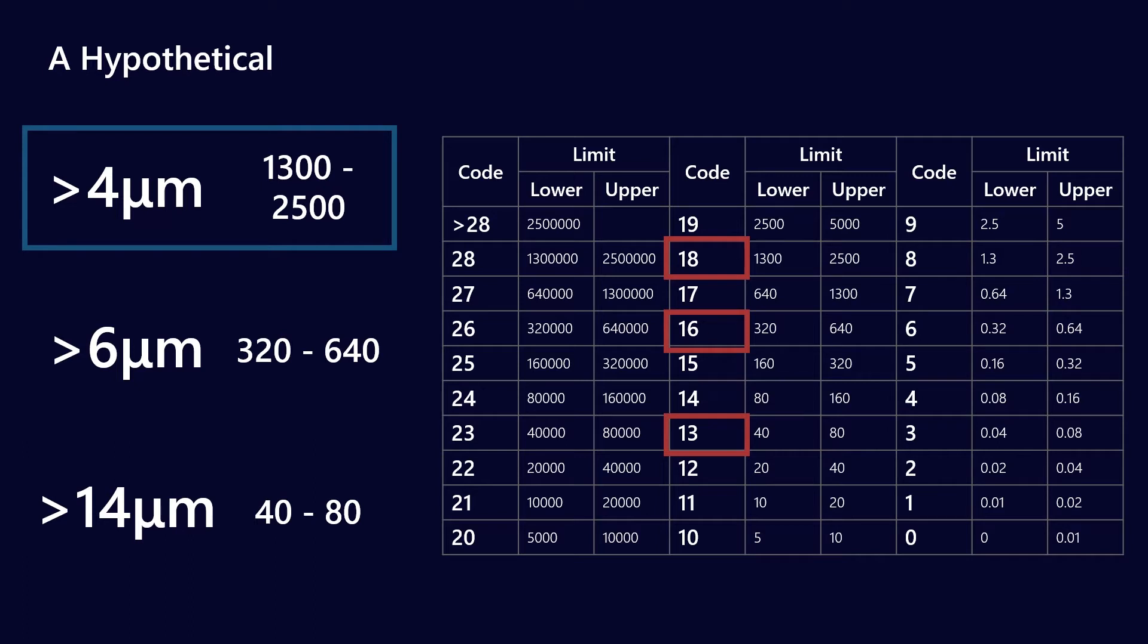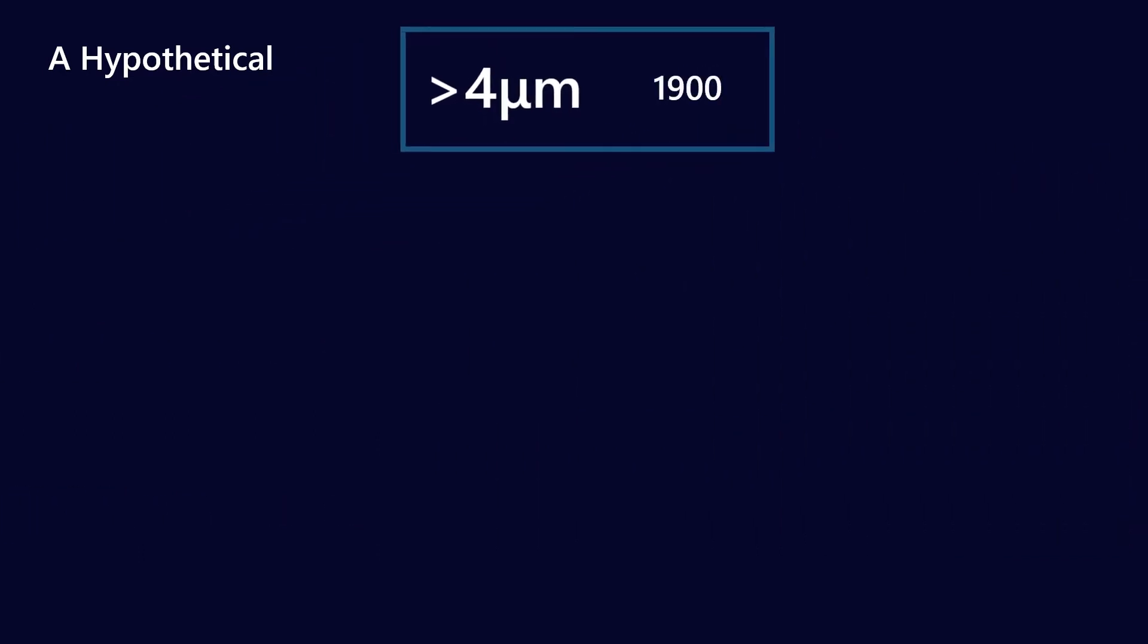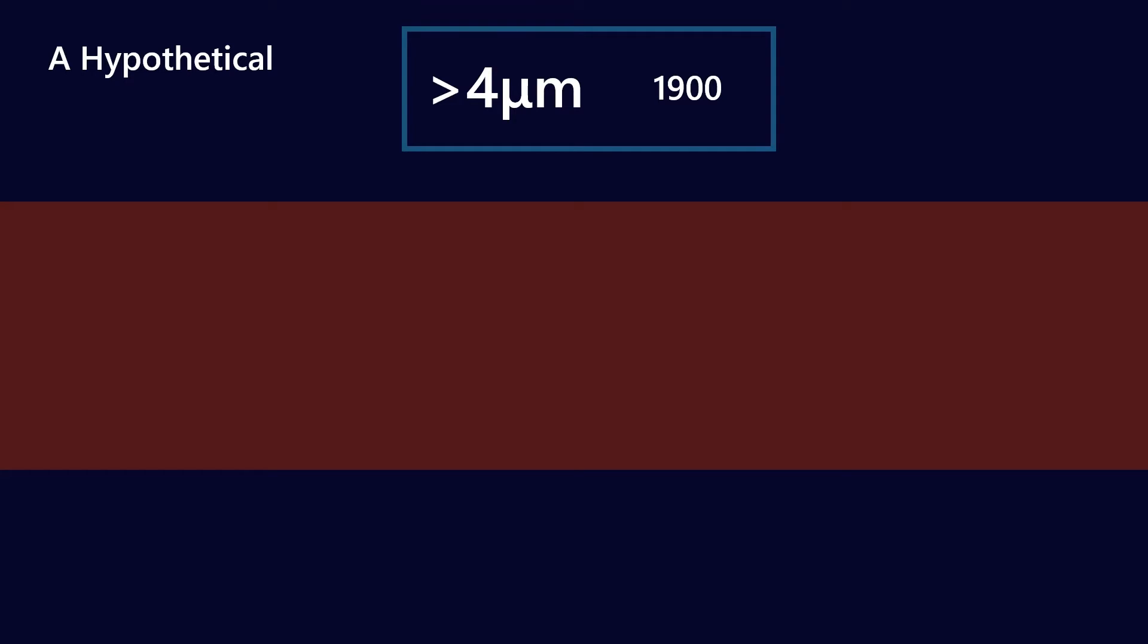So if I were just to focus, for simplicity, just on the particles above 4 micron, and I'll be generous and say that the particles are only going to be 4 microns in size, and I'll take the average. Let's say there's 1,900 of them per mill. So imagine we have a lubricant stream, and there are a bunch of particles going through. What kind of volume are those particles taking up?